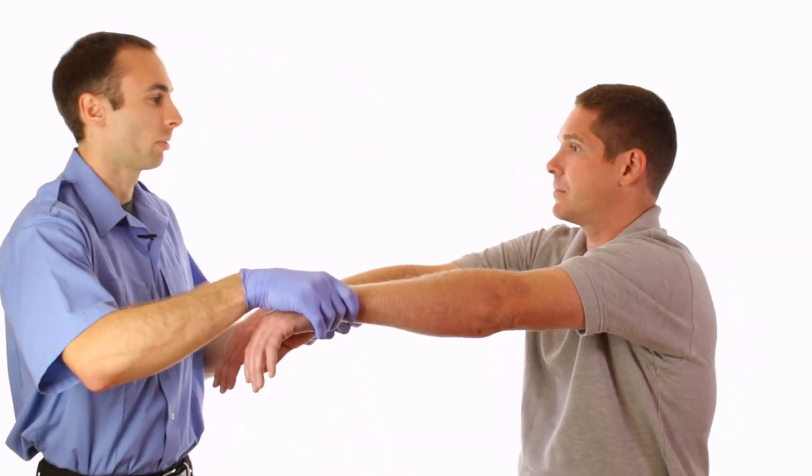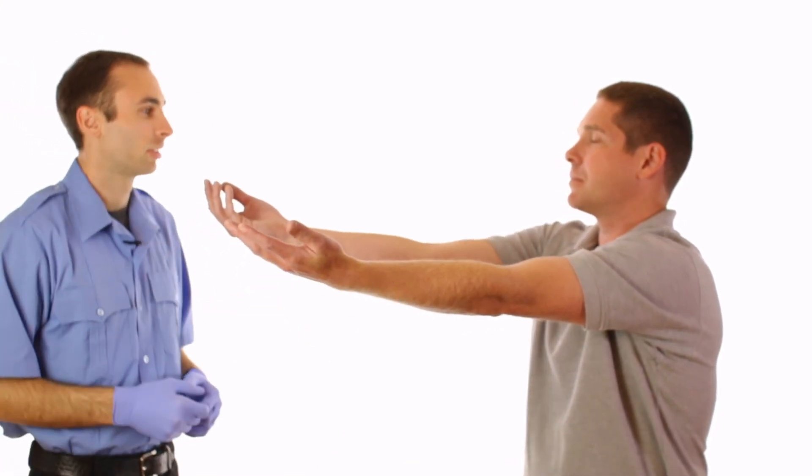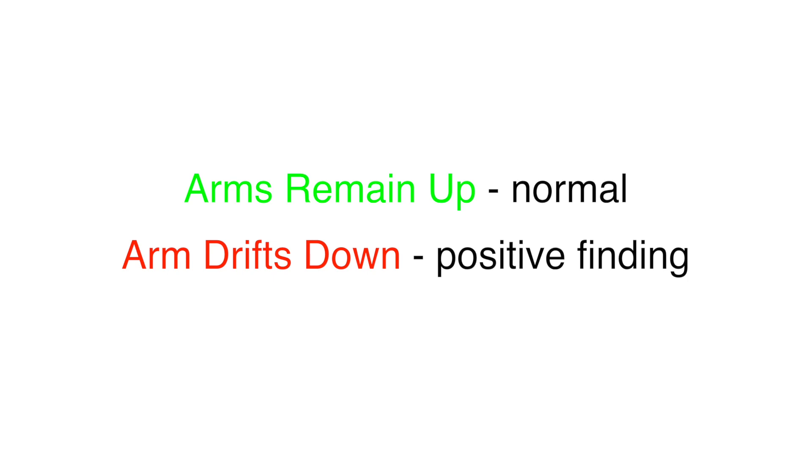For arm drift, have the patient outstretch both arms with their palms up. Have them close their eyes and ask them to keep their arms in place. Sir, I need you to stretch your arms out with your palms up and close your eyes for me and hold your arms there. If one arm drifts down, this is considered positive.